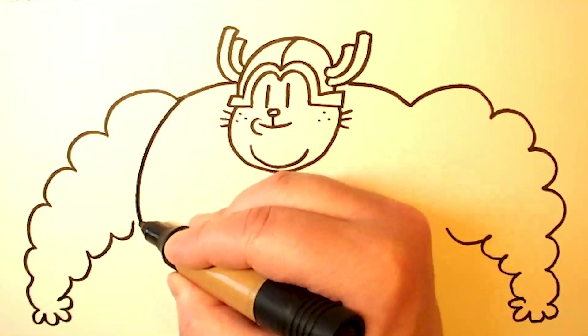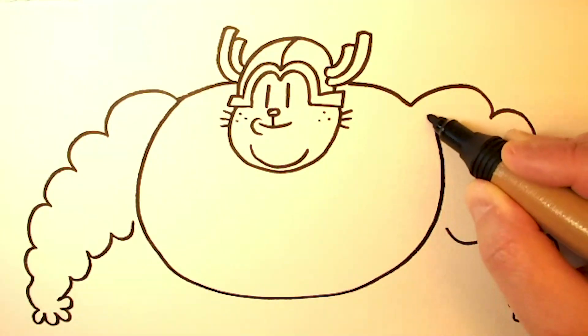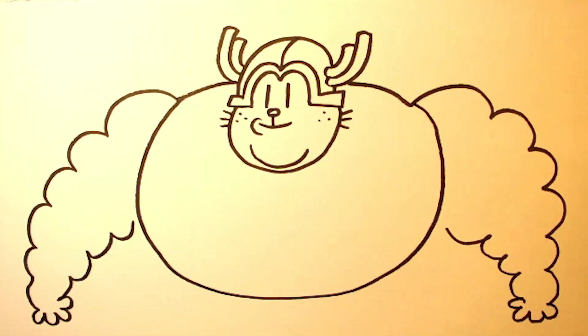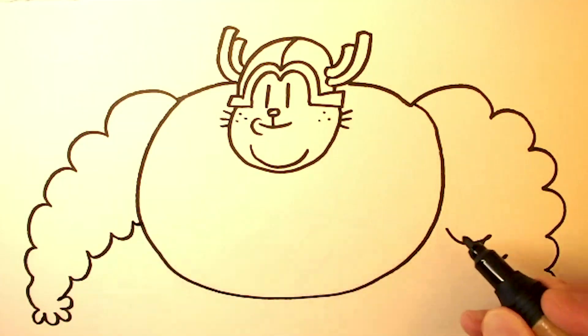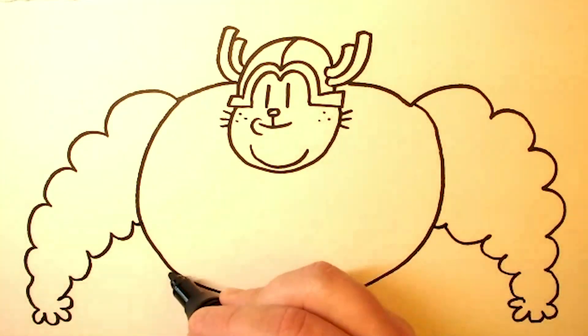Now we're going to draw his body, which is nice and round, and then we're going to put a couple legs down here. And the legs are kind of like mini versions of the arms.